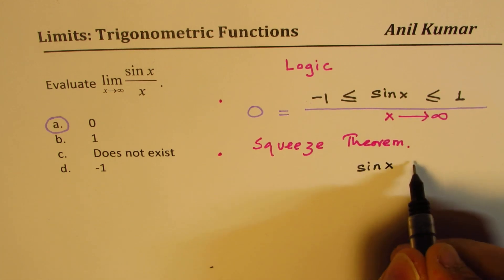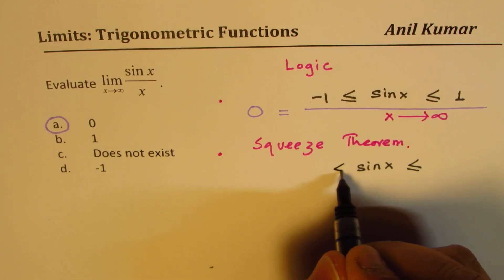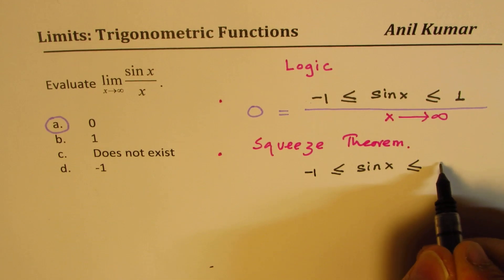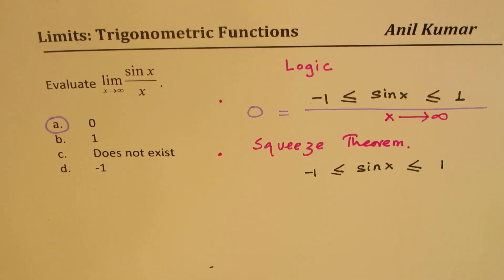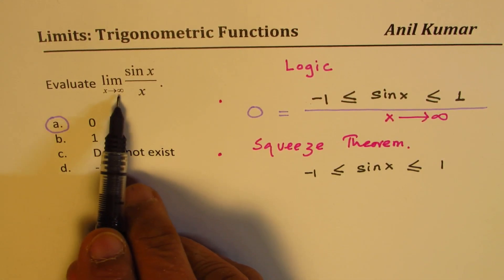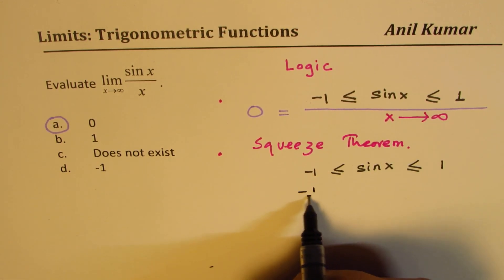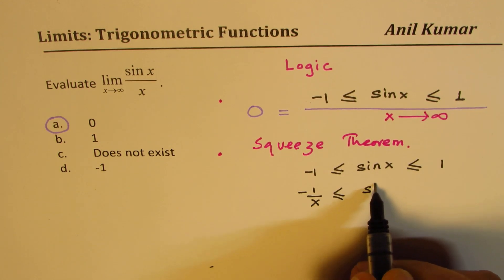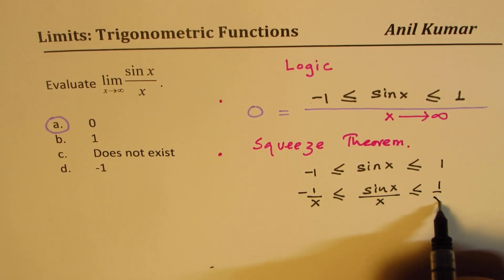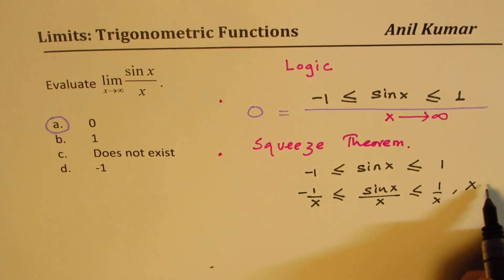At this stage we can say something like this: the value of sin(x) is always between -1 and +1. Now if I divide all these terms by x, what do I get, where x is a large number? So if I divide everything by x where x is approaching infinity, we are looking for a positive value.